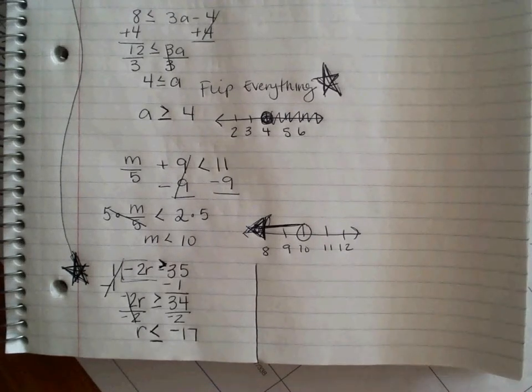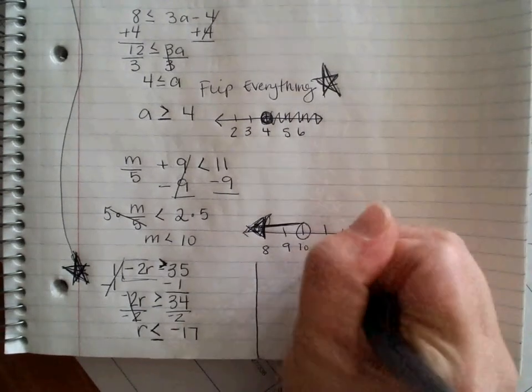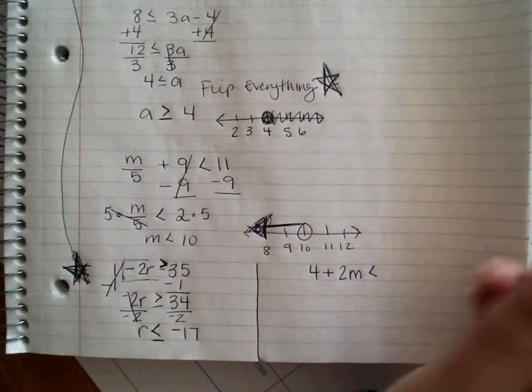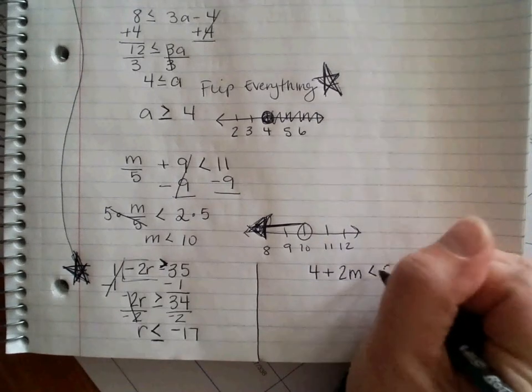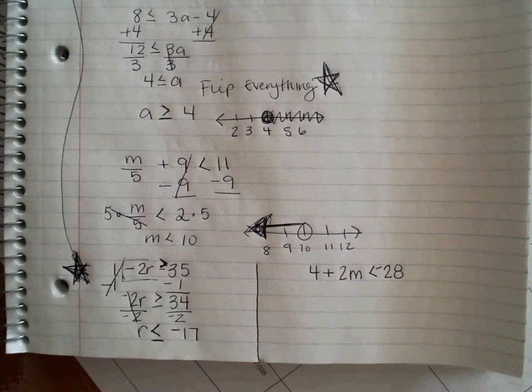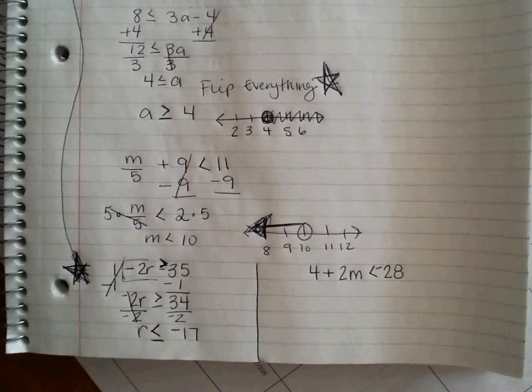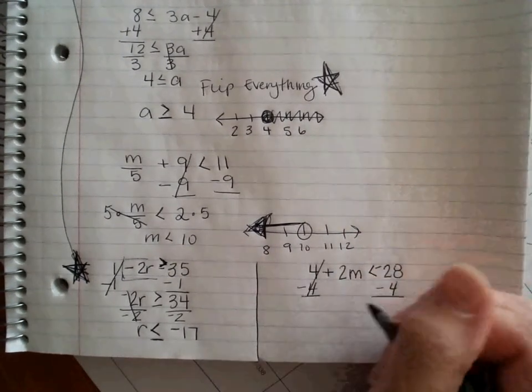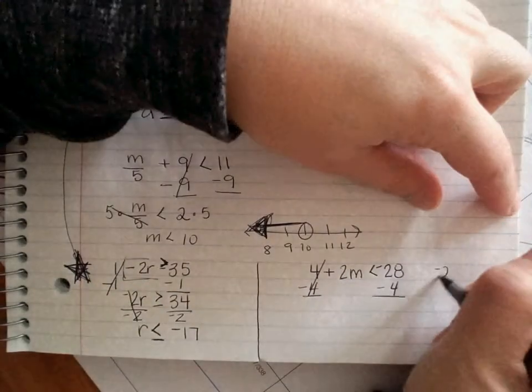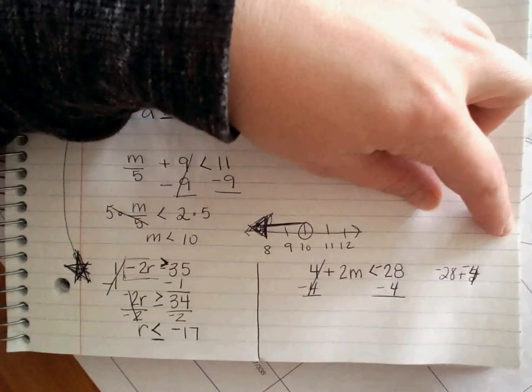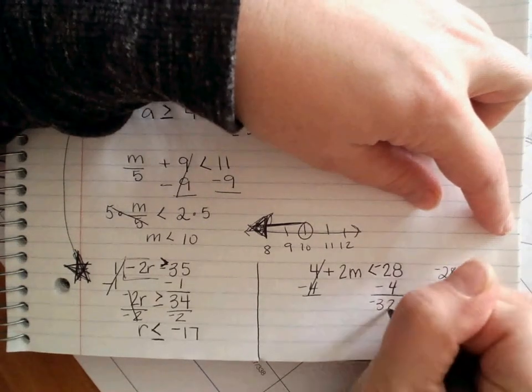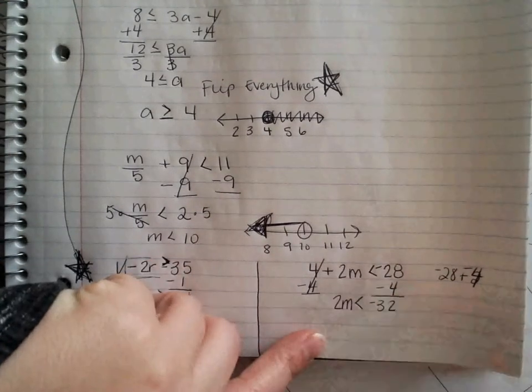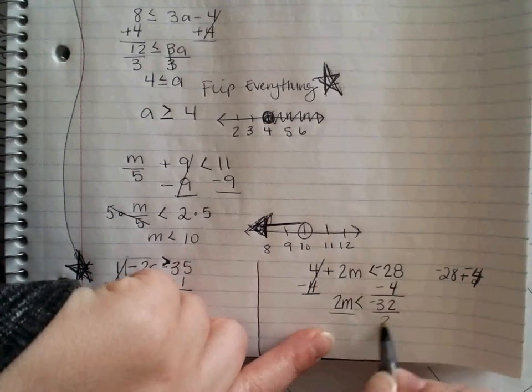Now, here's the time where you're going to see a negative, but you don't flip. So, if I give you something like 4 plus 2M is less than, we'll say, negative 28. Now, first thing I have to do, I have a positive 4 and I'm going to subtract 4 from both sides. Negative 28 minus 4 plus a negative gives me negative 32. Negative 32. Bringing everything else out. My less than and my 2M.